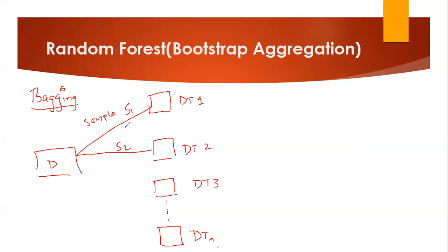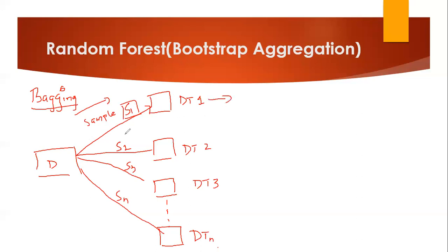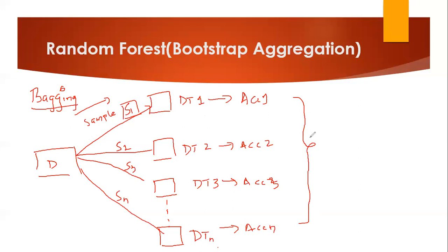Similarly, some other sample is given to Decision Tree 2. These samples are given with replacement, meaning when a sample is given to one tree, those records can reappear in the next sample given to another tree. Different samples S2, S3, up to Sm are given to each decision tree. Each decision tree then gets trained on its particular sample data, and during training you will have different accuracies for each decision tree.